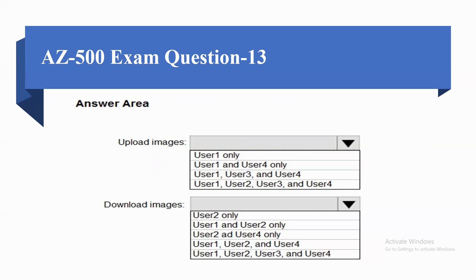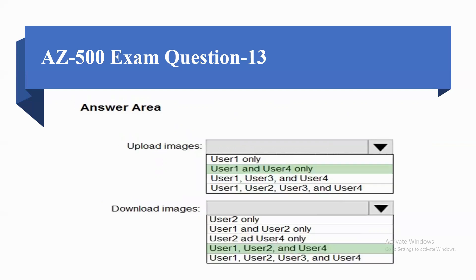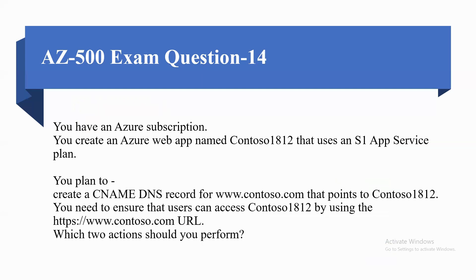Additional options: User1, User2, User3, and User4. For download images: User2 only; User1 and User2 only; User2 and User4 only; User1, User2, and User4; User1, User2, User3, and User4. The correct answers are: upload images are allowed only for User1 and User4, while download images are allowed for User1, User2, and User4.